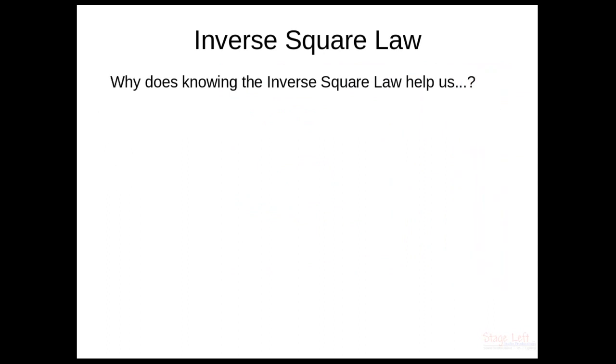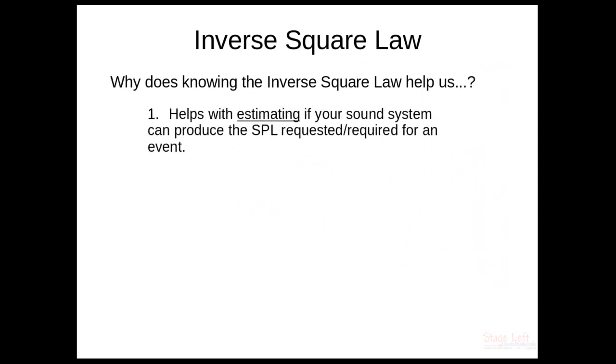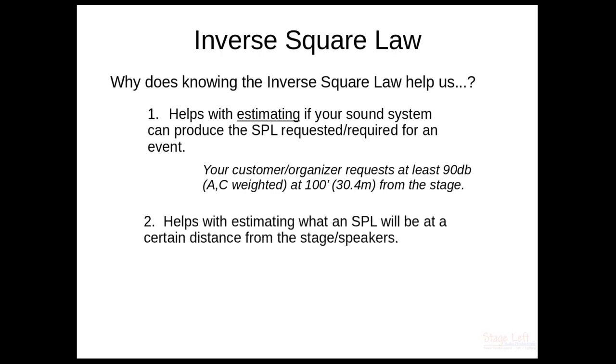So why does knowing the inverse square law help us? Here's why. It helps with estimating if your sound system can produce SPL for a particular event. For example, if you have a customer or an organizer, and they tell you that they're looking for a sound system that can do 90 dB or 100 dB out in front of house, this is how you can tell if your system can do that. Now, you're going to notice something here called A and C weighting. I'll mention that here a little bit later. Secondly, it helps with estimating what an SPL will be at a certain distance from the stage and speakers. And this is where it really comes important.